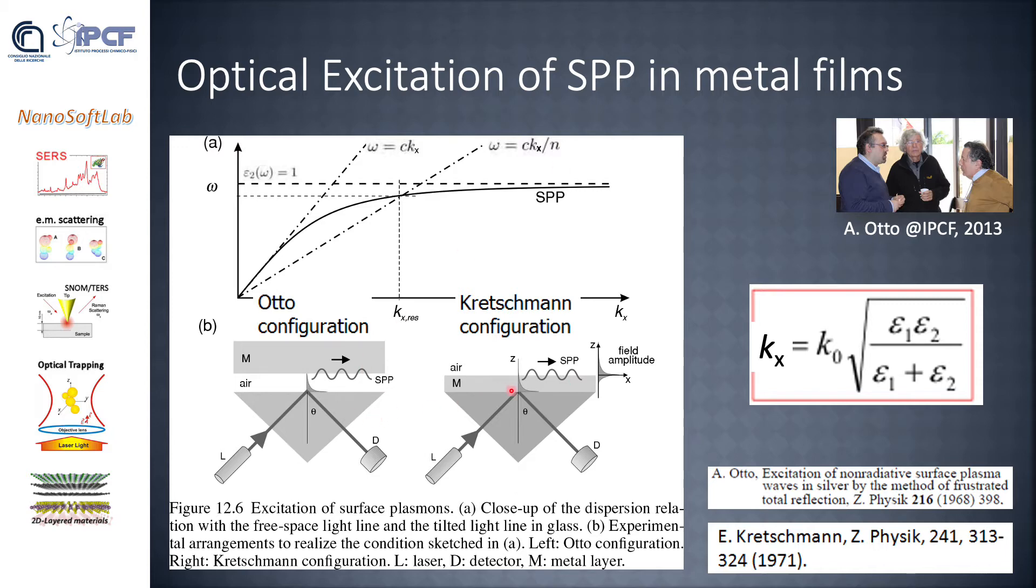These two specific configurations, and in particular the evanescent wave, are needed in order to provide additional momentum that permits us to bend the light propagation curve and have a condition in which the optical field matches the dispersion of the SPP. At this angle here, we will be able to launch the SPP wave, and this requires some evanescent wave to add some extra momentum to the optical field.